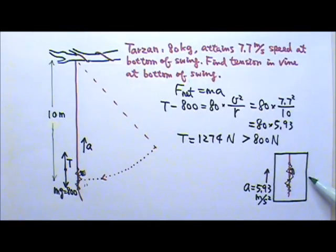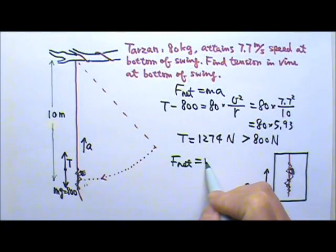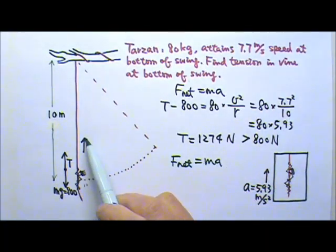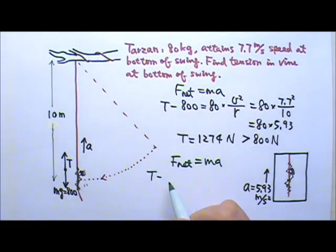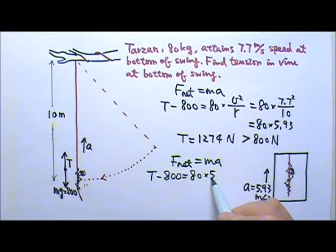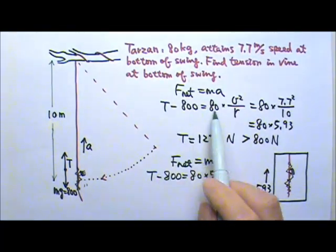If Tarzan happens to be in an elevator that has the exact same upward acceleration, 5.93 meters per second squared, his force diagram would be exactly the same as this one, and his force equation would be the net force equals Ma. The acceleration goes up, the upward force is bigger, so the net force is T minus 800 equals M, 80 kilograms times the acceleration 5.93, which is exactly the same as this force equation.